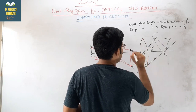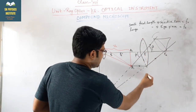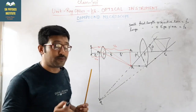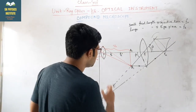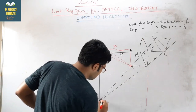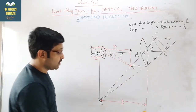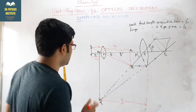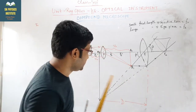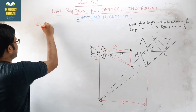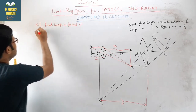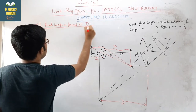The least distance of distinct vision is capital D distance. We have to calculate the magnifying power when the final image is formed at the least distance of distinct vision D. The magnifying power is denoted by M. With the optical instrument, the final image makes angle beta at our eye. Without the optical instrument, if you keep the same object at the least distance of distinct vision, it makes angle alpha. So magnifying power equals beta divided by alpha.